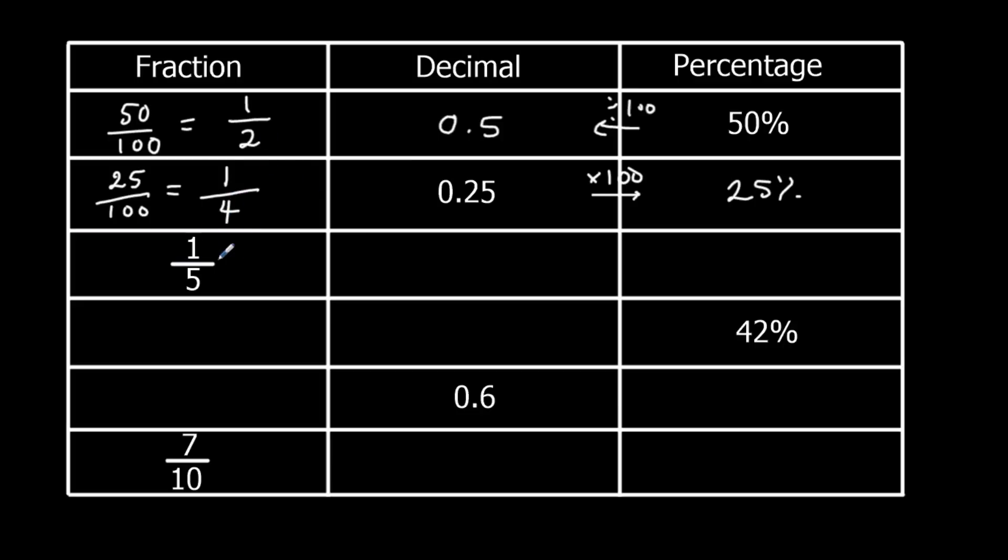1 fifth. Let's do to a decimal. So the numerator, top number, divided by bottom number. Numerator divided by denominator. 1 divided by 5 is 0.2. And then we're going to do that times 100 to go to a percentage. So 20%.